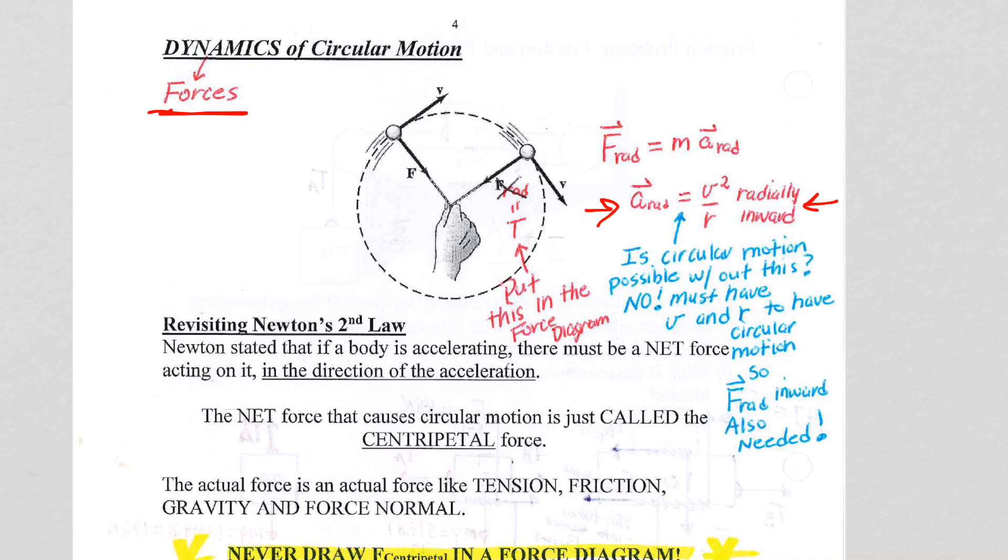All circular motion is accelerated motion because it is not possible to have circular motion without speed V. That's motion. And you can't have a circle without a radius R. So it is impossible to have circular motion without V squared on R.